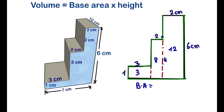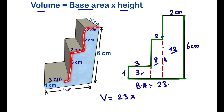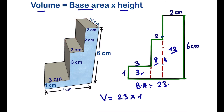We need to add them up to get the base area. Twelve plus eight is twenty, plus three gives us twenty-three, so the base area is 23. The volume equals base area times height: 23 times 10 equals 230 cubic centimeters. That is the volume.